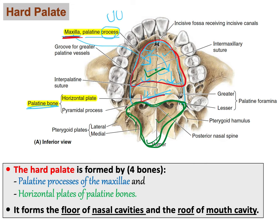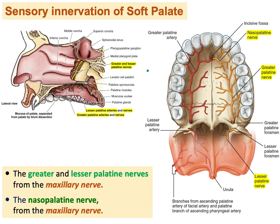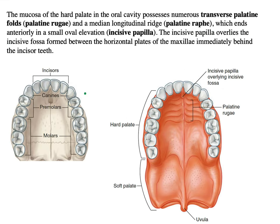The hard palate forms the roof of the oral cavity and at the same time forms the floor of the nasal cavity. Looking at a parallel cross-section view, the oral cavity is below and the nasal cavity is above, with the hard palate separating them.